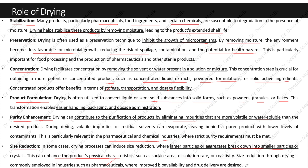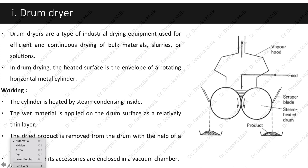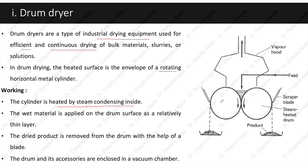Now, let's discuss drum dryers. Drum dryers are a type of industrial drying equipment used for efficient and continuous drying of bulk materials, slurries, or solutions. In drum drying, the heated surface is the envelope of a rotating horizontal metal cylinder. The cylinder is heated by steam condensing inside. The wet material is applied on the drum surface as a relatively thin layer. The dried product is removed from the drum with the help of a blade. The drum and its accessories are enclosed in a vacuum chamber, and the drums are in continuous rotating motion.